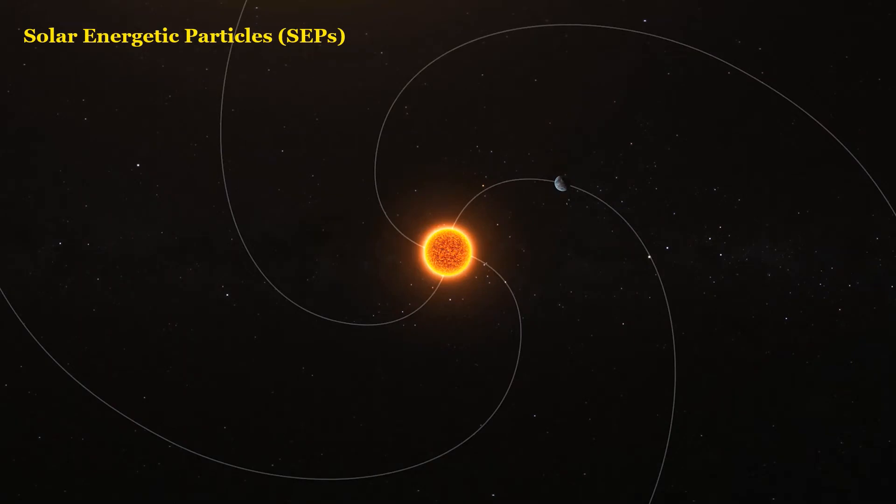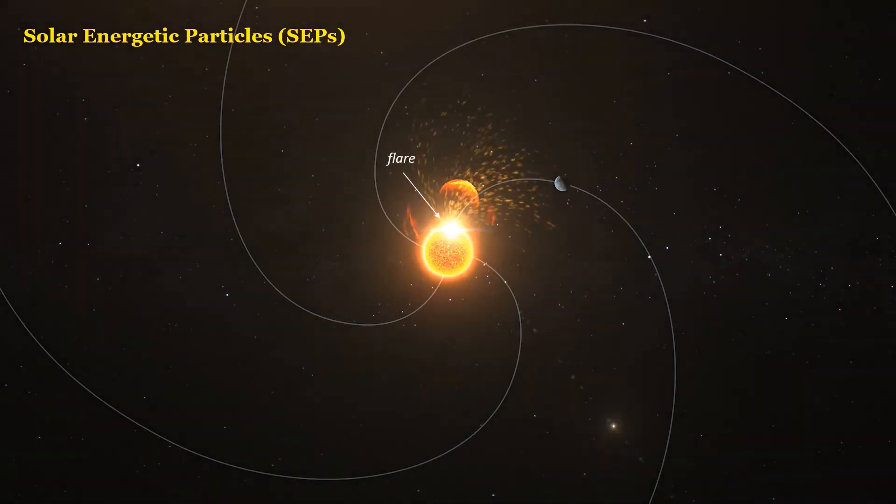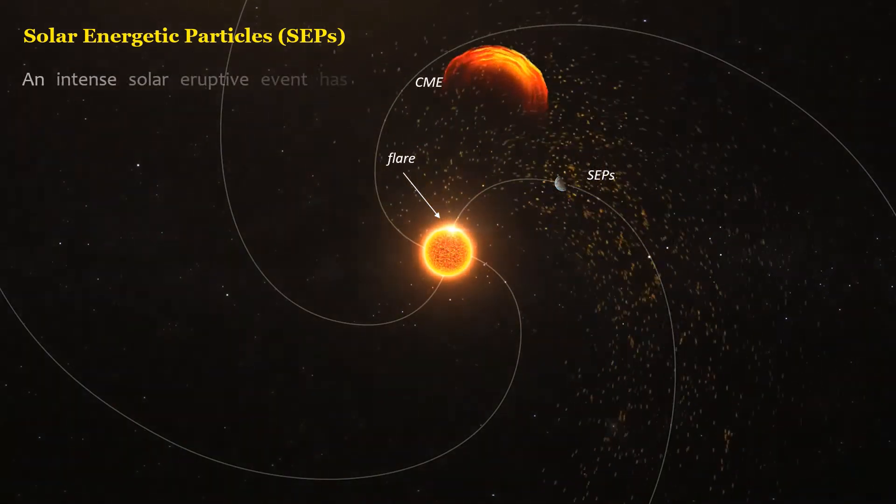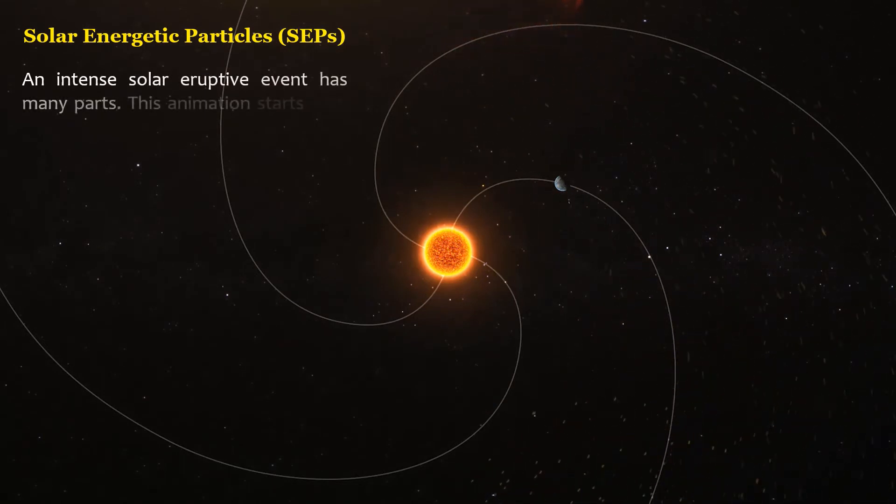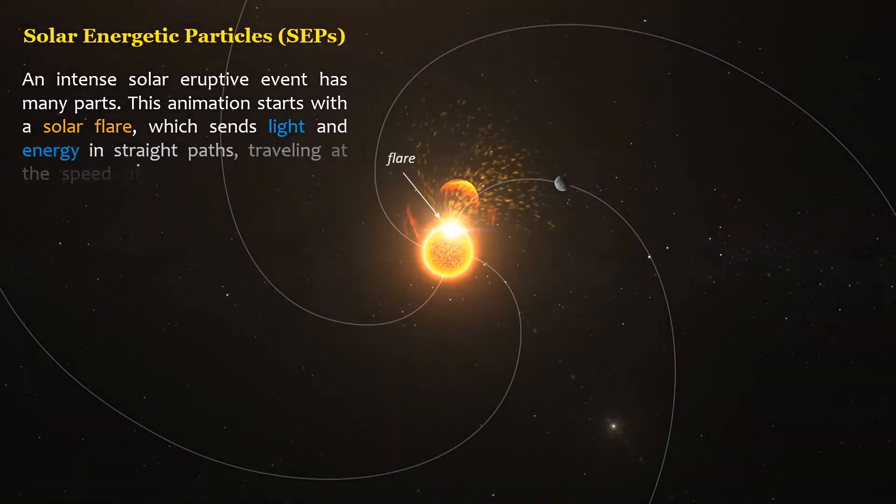An intense solar eruptive event has many parts. This animation starts with a solar flare, which sends light and energy in straight paths, traveling at the speed of light.